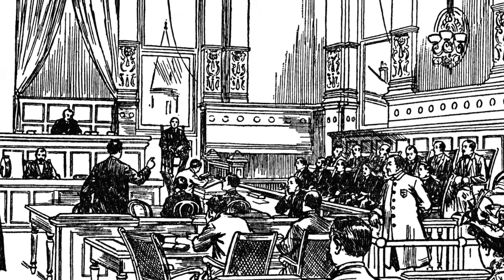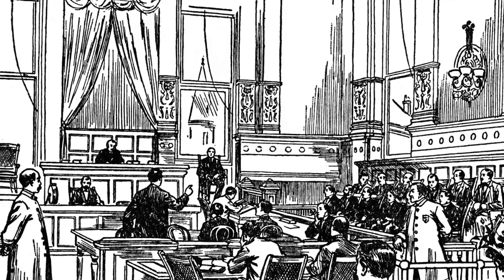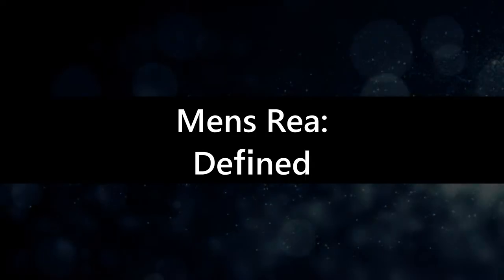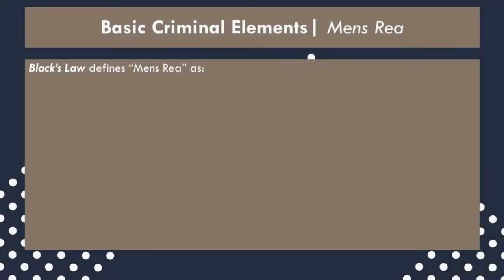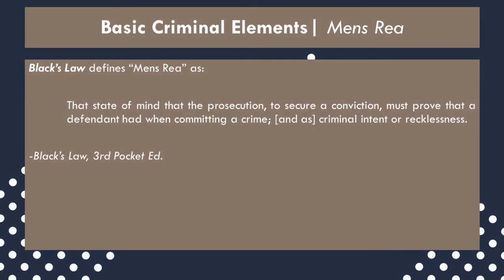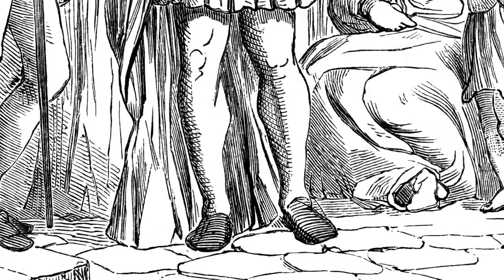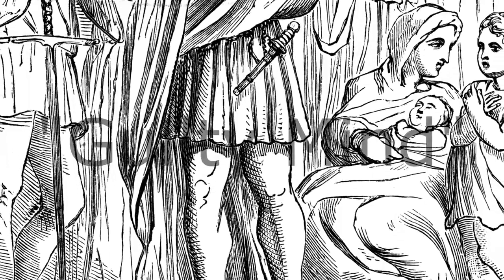Mens rea refers to the mental state or state of mind the defendant must be shown to possess by the prosecution. Black's Law defines mens rea as: "that state of mind that the prosecution, to secure a conviction, must prove that a defendant had when committing a crime, and as criminal intent or recklessness." Mens rea is a Latin phrase meaning guilty mind.